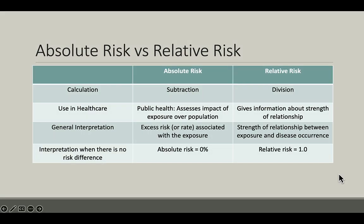It can sometimes be difficult to keep your risk calculations straight, so this table is useful to help you differentiate between absolute risk and relative risk. The calculation for absolute risk is subtraction, whereas for relative risk it's division. In healthcare, absolute risk is usually used to assess the impact of exposure over a population, while relative risk gives information about strength of relationship. The general interpretation of absolute risk is excess risk or rate associated with the exposure, and for relative risk it is the strength of relationship between exposure and disease occurrence.